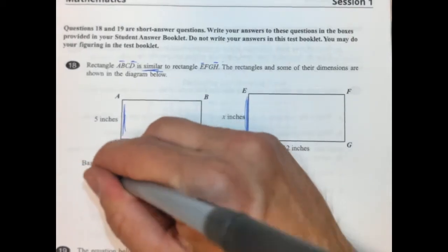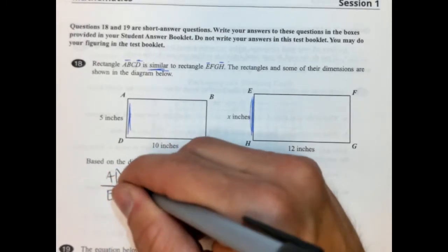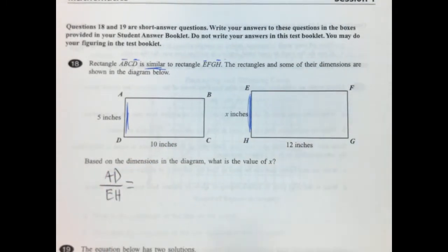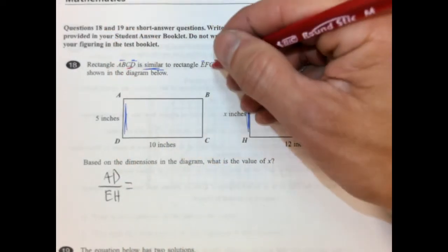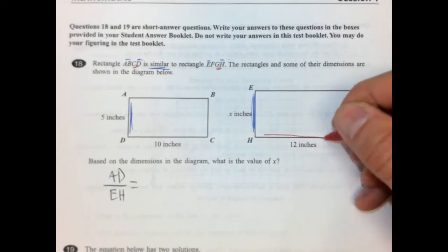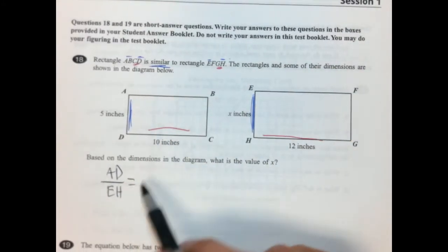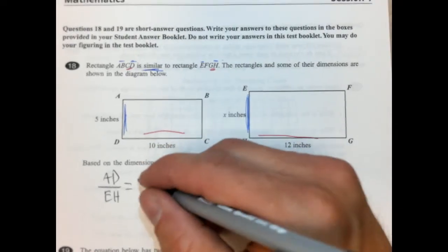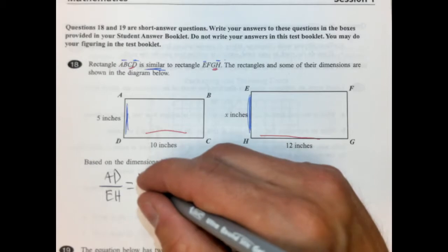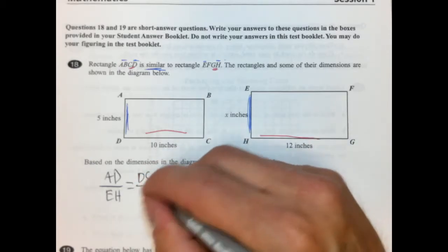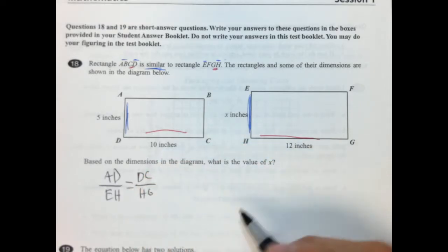So we're going to put AD over EH and then we have, it looks like DC. So these two that should match up with GH which is right here. Okay. So because I had this on the top over here, I'm going to have this on top over here as well. The left figure will be on the top of both ratios. It's important to be consistent. DC over HG.